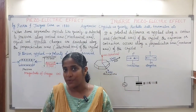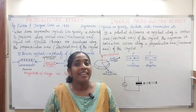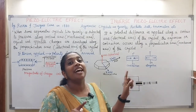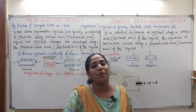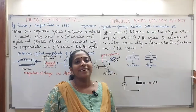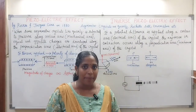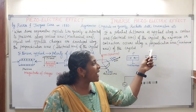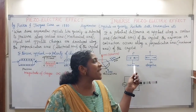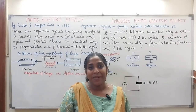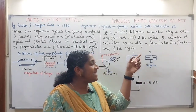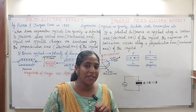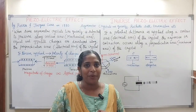The converse of this effect is also true — if we apply an electric field along the electrical axis, a change in the length of the crystal can be observed. If we reverse the polarity of the charges, the initial contraction will change to elongation. Now, instead of a DC voltage, if we apply an AC voltage — an alternating voltage — a very interesting phenomenon will occur.